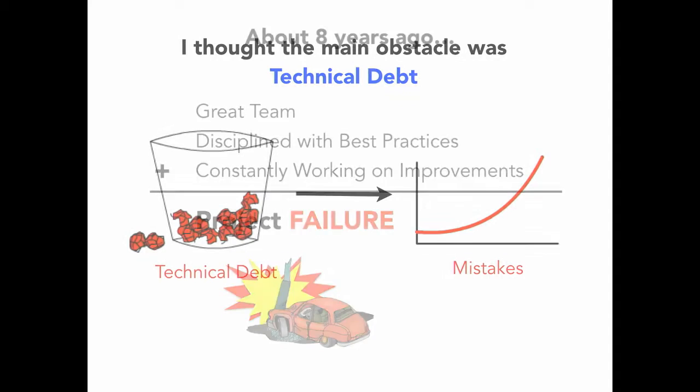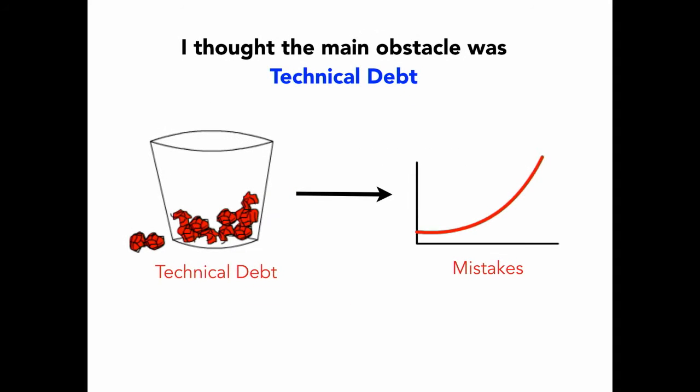I thought the main obstacle was technical debt that was building up in the code base and causing us to make mistakes. So I built this tool that could detect high-risk changes in the code and let us know where we needed to do extra testing. But what I found wasn't what I expected at all.